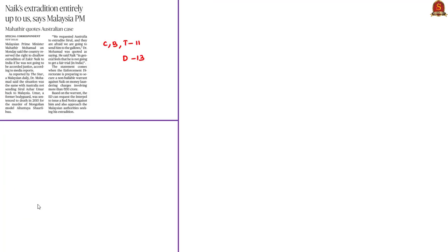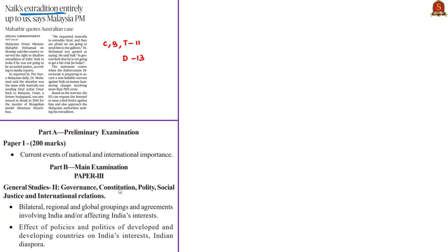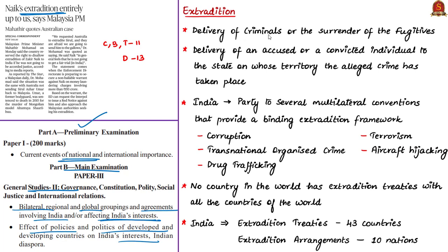The next article deals with the process of extradition. This will be relevant in prelims under current events of national and international importance, and in mains GS paper 2 under global agreements involving India and affecting India's interests, bilateral agreements, and the effects of policies of developing countries on India's interests. Extradition means the delivery of criminals or surrendering of fugitives to the requesting country — the delivery of an accused or convicted individual to the country in whose territory the alleged crime took place.